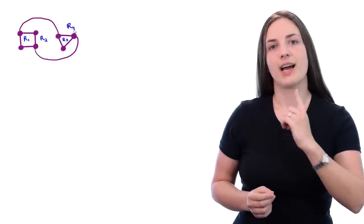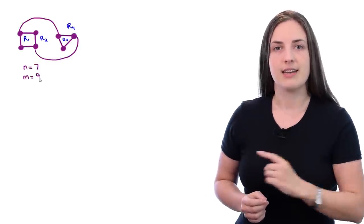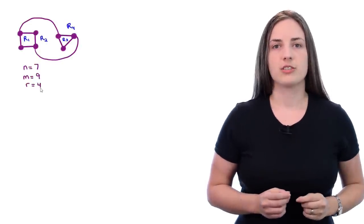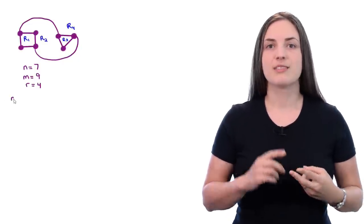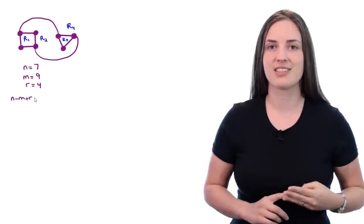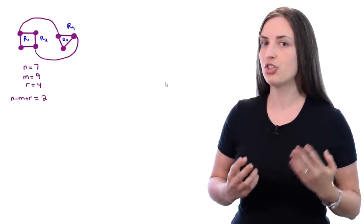We already saw that it has four regions. So in this example, we have seven vertices, nine edges, and four regions. Now you may notice that if you take the number of vertices minus the number of edges plus the number of regions, you get two.